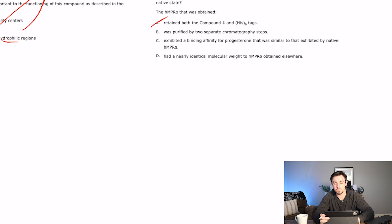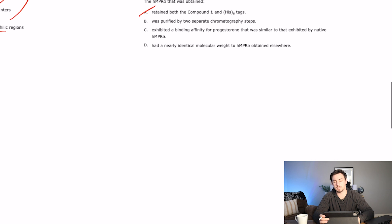B says it was purified by two separate chromatography steps. Several things are purified by two separate chromatography steps. It's not the fact that it was purified by two of them. It's the fact that which specific two it was. And I don't even know that purified is the correct word here. I don't really like that, that it was purified. Because if it was purified by the first one, then what would be the purpose of the second one? I don't think it's purified. I think it might be maybe separated. So I don't like B.